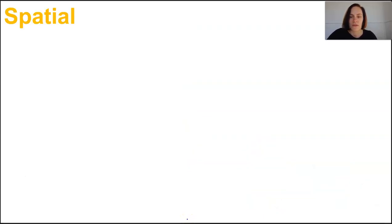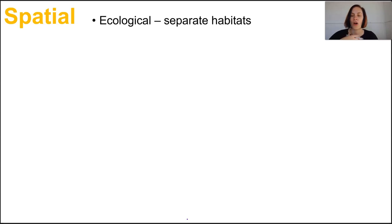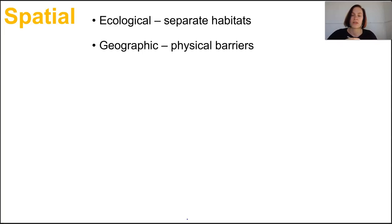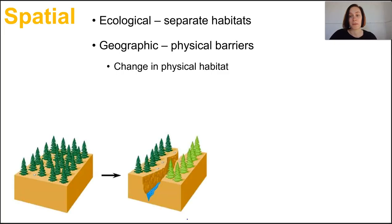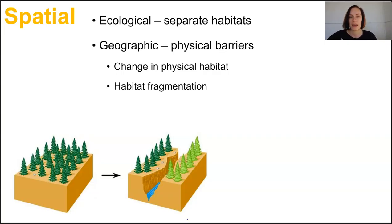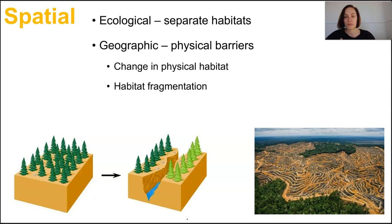Spatial isolation refers to the physical space a population occupies. Ecologically, populations of the same species may live in separate habitats or microhabitats and never meet, so they never breed. Geographical isolation refers to a physical barrier preventing populations from meeting — a river changing course and cutting off populations, seeds colonising a new island, water levels dropping to isolate marine species, habitat fragmentation due to a road or tree felling, or natural disasters — all leading to populations being isolated.